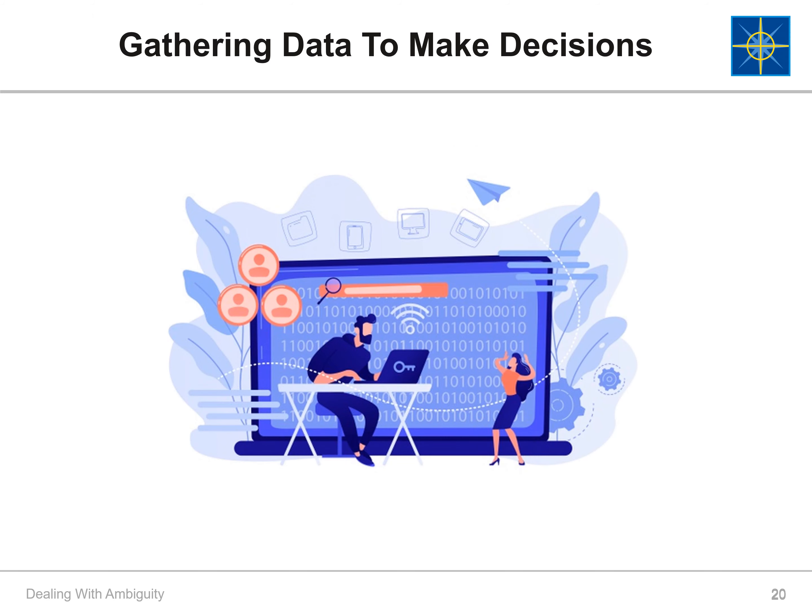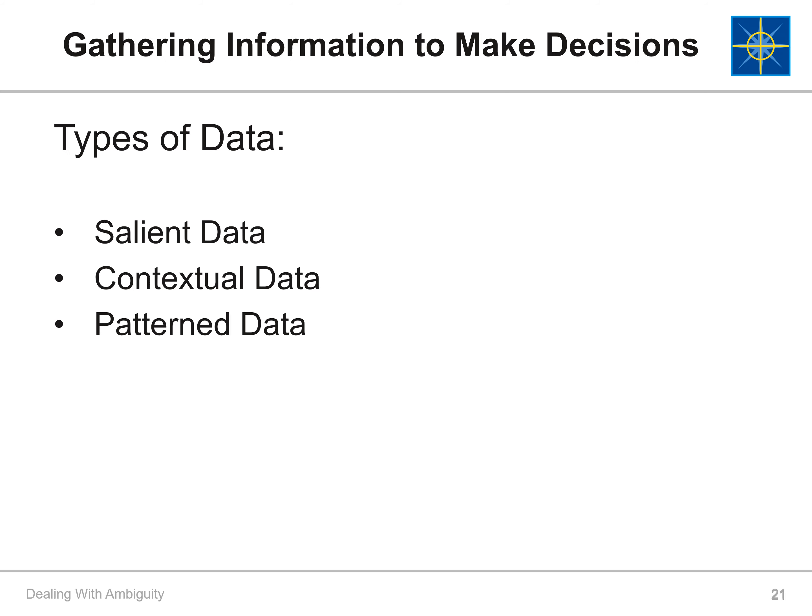Now that we know the four types of decisions, what data do we need to make a decision? We'll discuss three types of data that help make decisions: salient, contextual, and patterned.